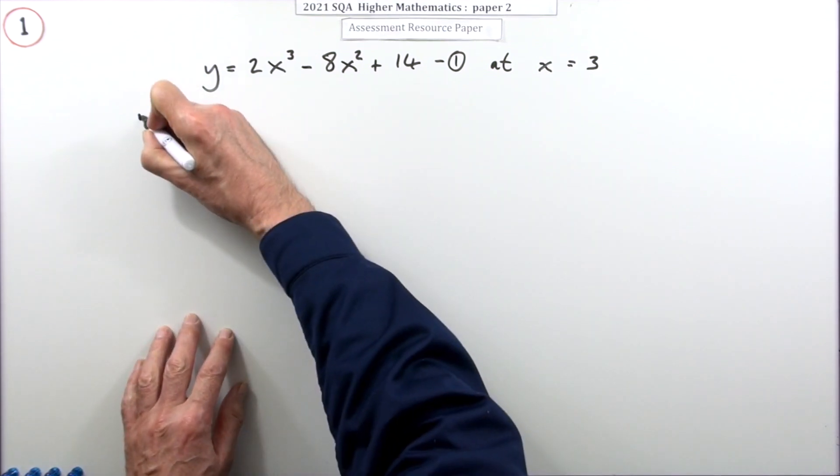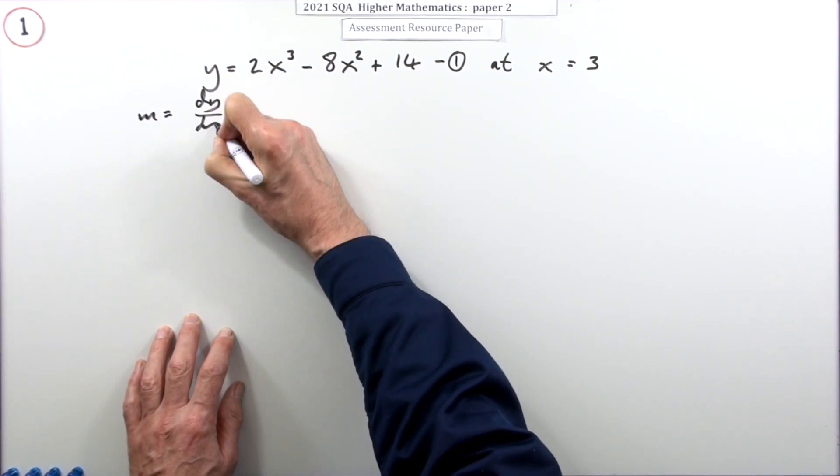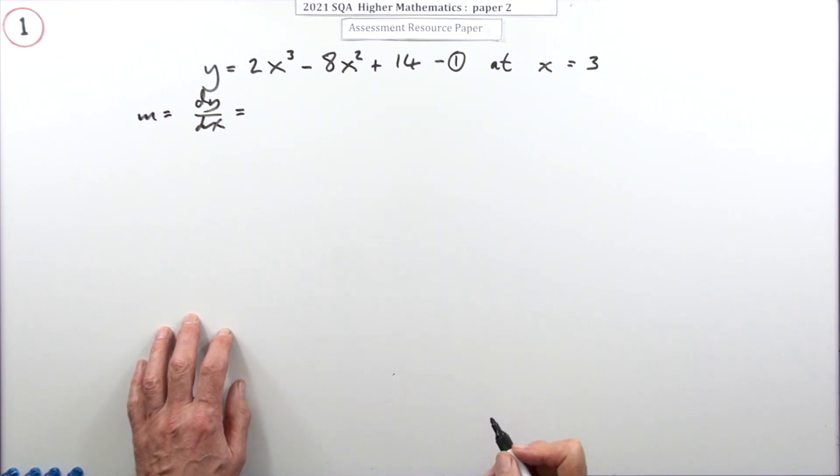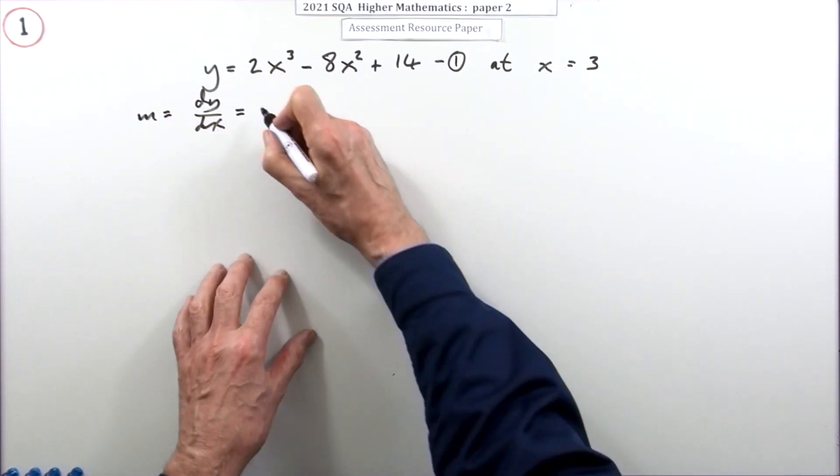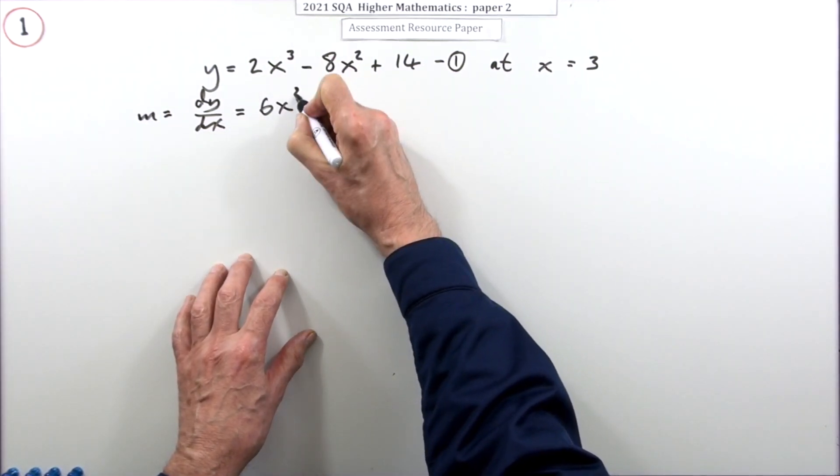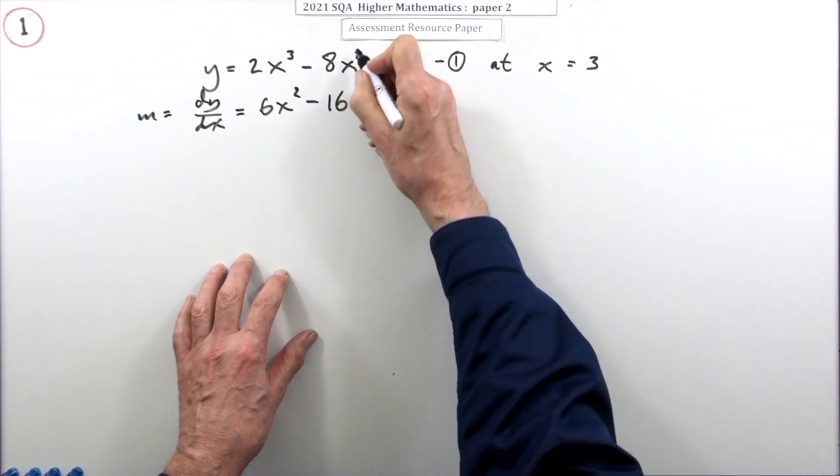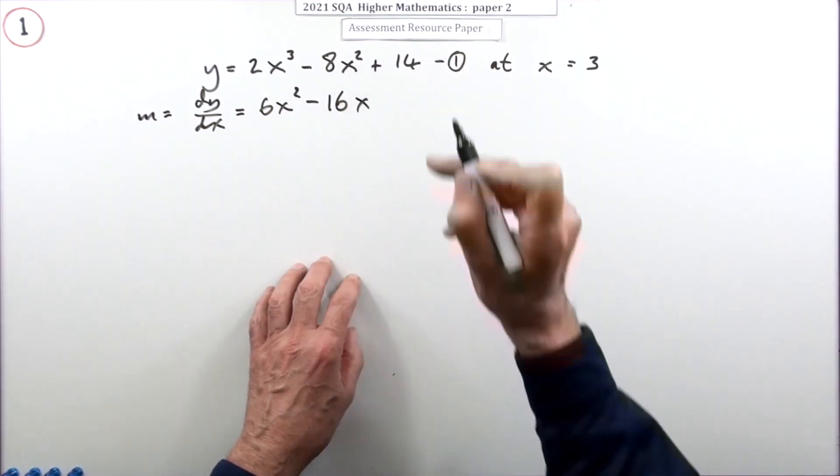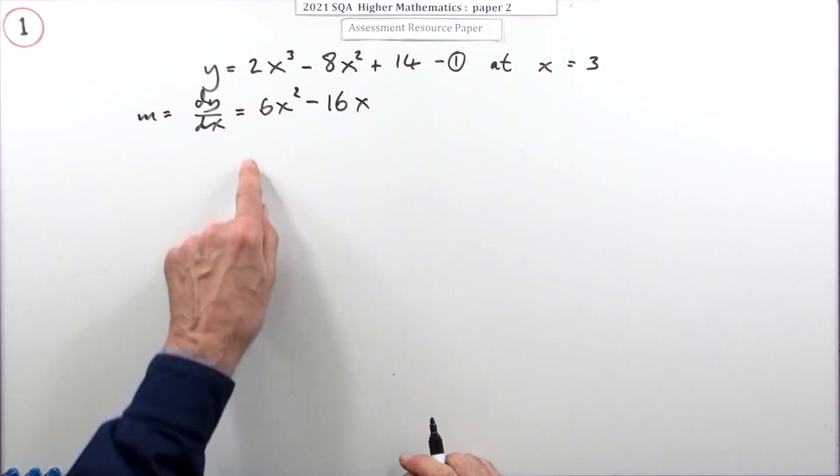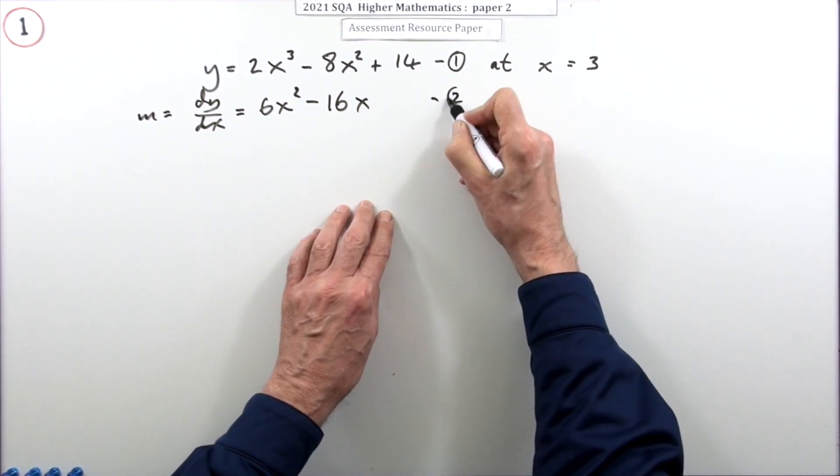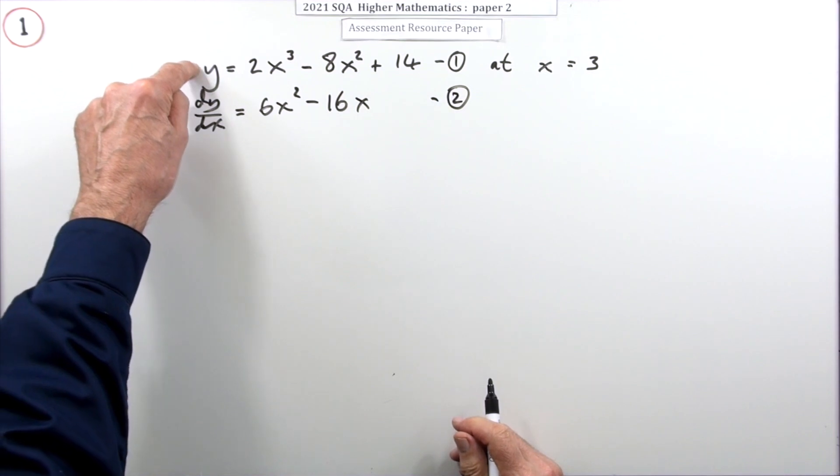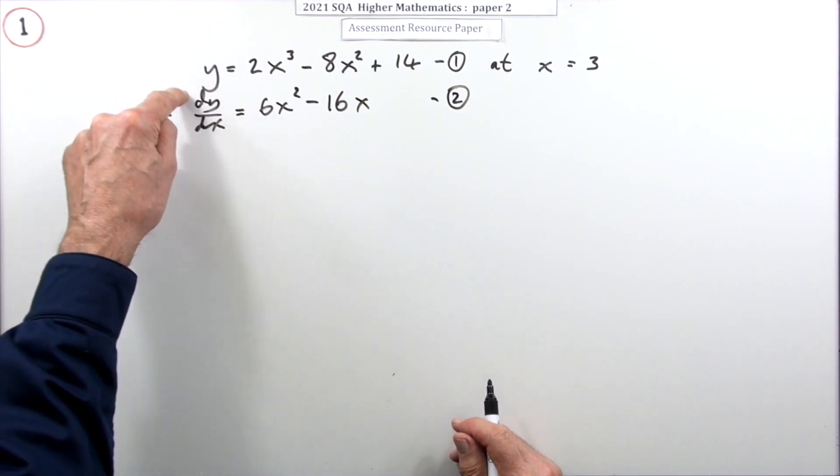I'll get the gradient from the derived equation, the derivative. So go through the process: multiply by the power, take one off the power, multiply by the power 16, take one off the power. There's no x term and a constant doesn't change so that's gone. So there's my second equation I'm going to use.